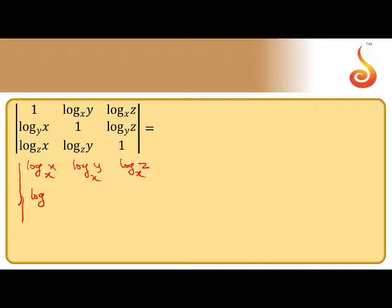So move to second row. The base is y, so you can write instead of 1, log_y(y). Next, log_z(y). Next one, same as it is, log_x(z), base is z. Log_y(z), log_z(z).